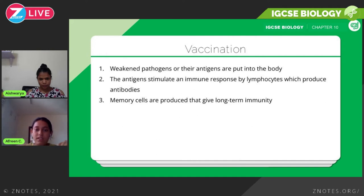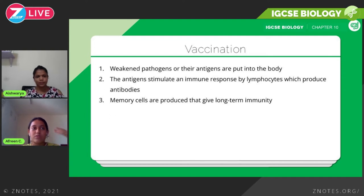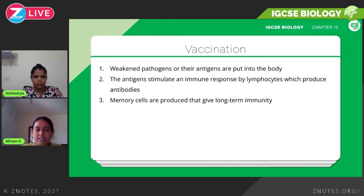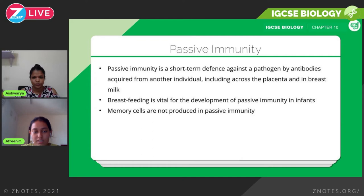Memory cells are also produced, giving long-term immunity. The duration depends on the disease — for some, one infection means you're unlikely to get it again in your lifetime. For others, immunity lasts only a few months. That's why some vaccinations need to be repeated every few years, like the flu vaccine annually, while others like the polio vaccine are taken once in your life.